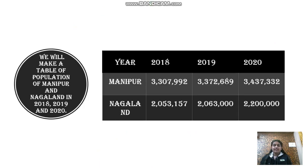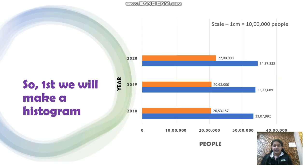After getting the information, we will make a table of the population of Manipur and Nagaland for 2018, 2019, and 2020, and it will look like this. After receiving the table, we can make our histogram, and it will look like this.